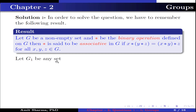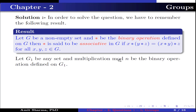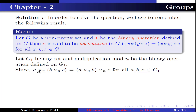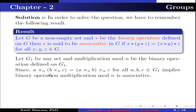Let G1 be any set and multiplication mod n be the binary operation defined on G1. Since (a mod n · b) mod n · c = a mod n · (b mod n · c) for all a, b, c belonging to G1, this implies binary operation multiplication mod n is associative. Therefore option A is true.